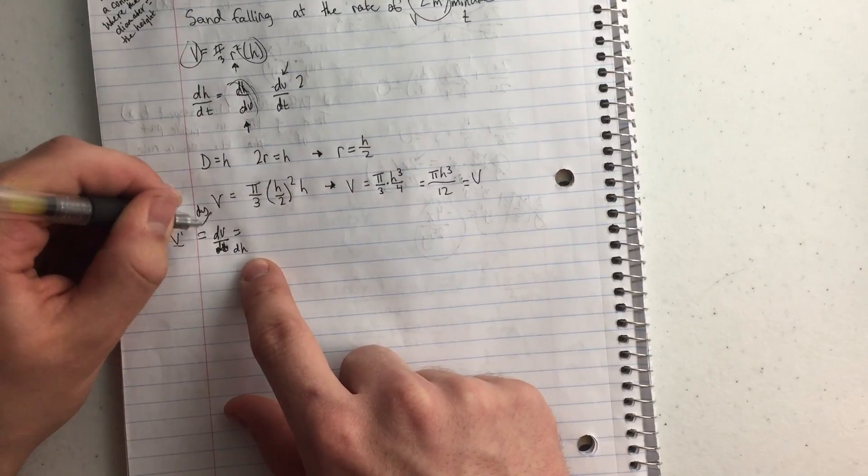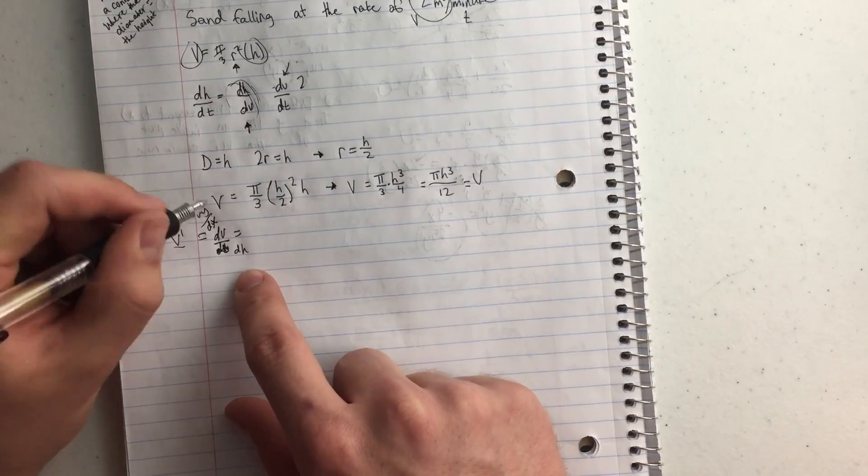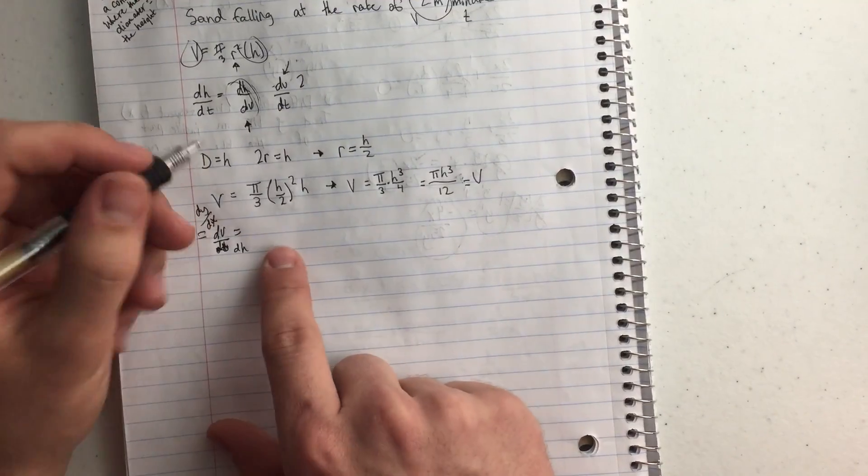So think dy dx, right? But instead of x, I have h. Instead of y, I have v.